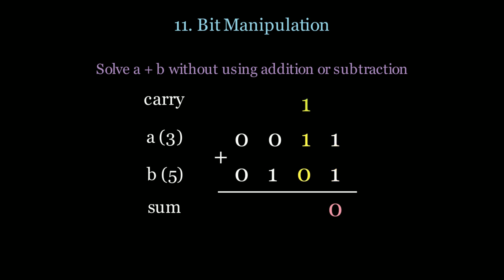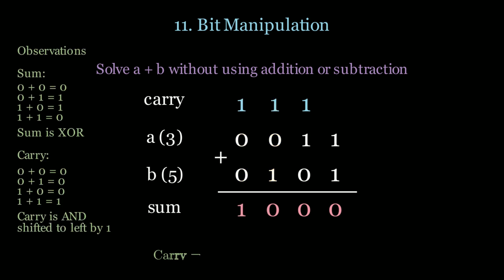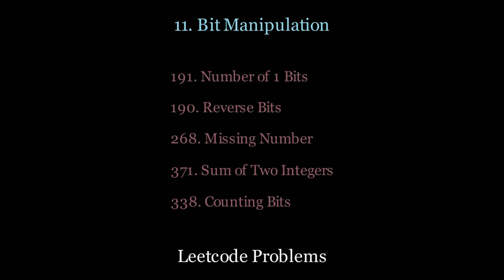Once again, 1 plus 1 is 10, so we put a 0 and carry a 1. The same thing happens again, and 1 plus 0 plus 0 is 1, so the sum is 1. Key observations: the carry is a AND b shifted one column to the left, and the sum is the XOR operator. If you want more practice, look at the following LeetCode questions.